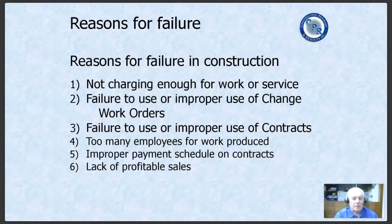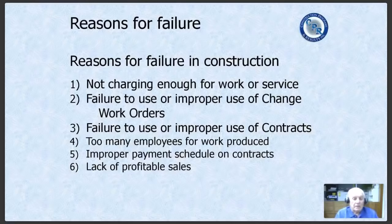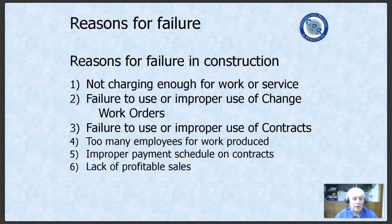The second reason construction companies go out of business is lack of use or improper use of change work orders. Change work orders should be outlined, written, signed, and paid up front before any work is done. The third reason is failure to use or improper use of contracts. It's amazing — contractors will learn how to build a building and do a great job, but they won't learn how to write a good contract. We still get people calling us with no contract on jobs in the hundreds of thousands of dollars.